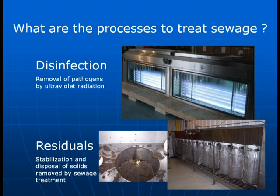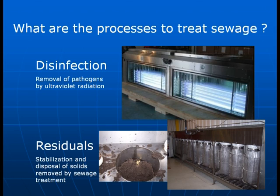The last two major components of sewage treatment are disinfection and residuals management. With disinfection, there are still some pathogens or disease-causing organisms in the effluent coming out of secondary treatment. You put in some sort of oxidizing agent or system that kills the pathogens. The most common one used today is ultraviolet radiation — a series of lamps that create UV radiation affecting the DNA of the pathogens and ultimately killing them. Alternate systems such as chlorine are not commonly used anymore because chlorine is toxic to fish, and you can also use ozonation, but UV treatment is the most commonly used system.